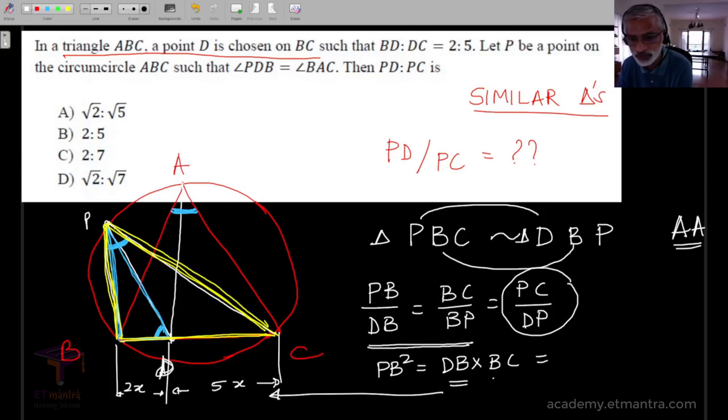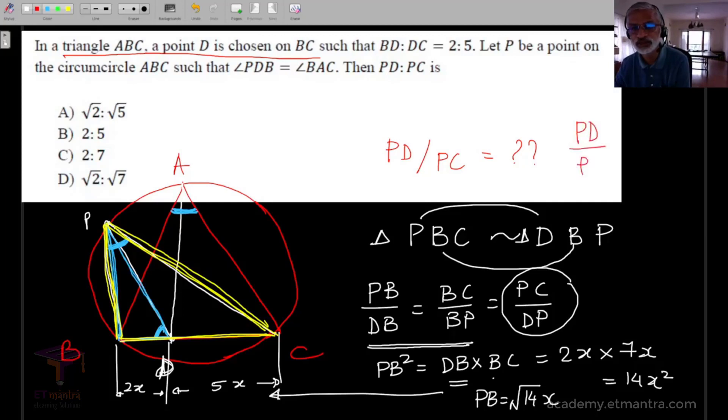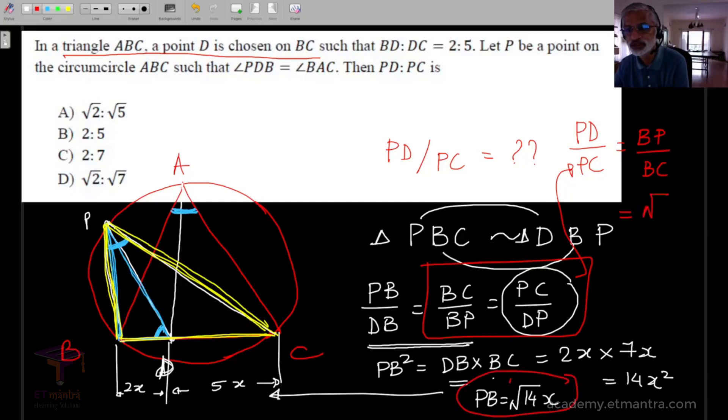We find here that PB squared is equal to DB into BC, and this information you should get from the diagram here. So DB is actually equal to 2X and BC is actually equal to 7X, and this is equal to 14X squared. And now we have the value of PB as root 14X, and then we are almost there to finish off the final step. The final step is, what is it that you want? You want PD by PC, which is happening to be equal to... look at this, we can use the information from here, and this means that PD by PC is equal to BP by BC.